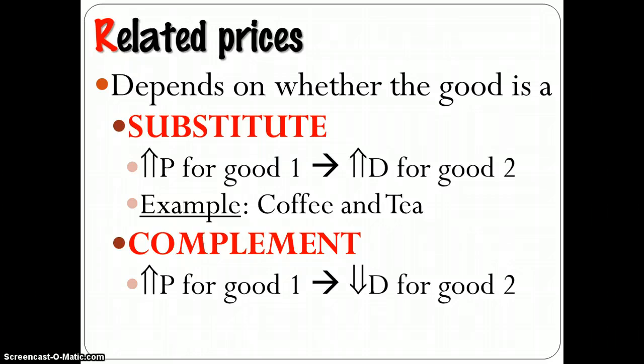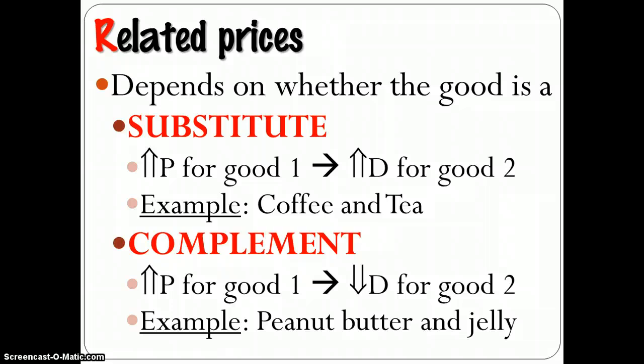If there's a complement, those are goods that go together, like peanut butter and jelly, then if the price of one good goes up, then my demand for the other goes down, because it's more expensive now to make a peanut butter and jelly sandwich. So when the price of peanut butter goes up, I'm going to make fewer sandwiches, which means I need less jelly. And so when we see the price rise and demand fall for another good, that's a complement.